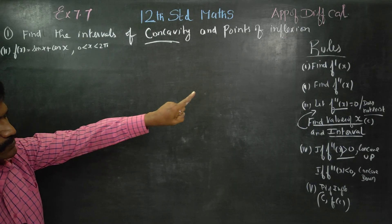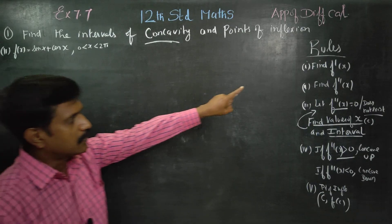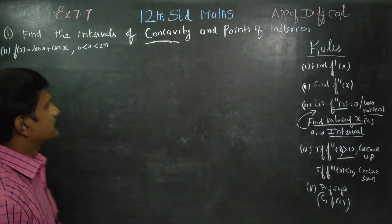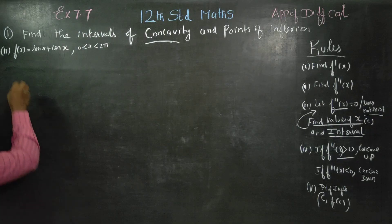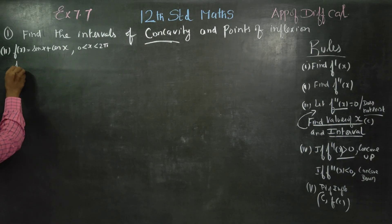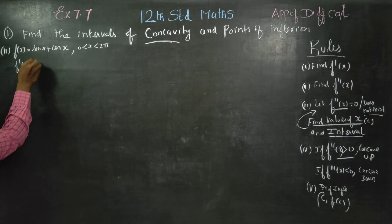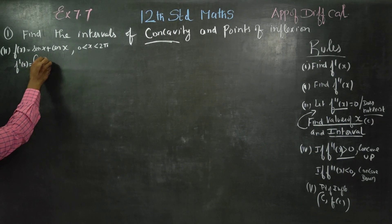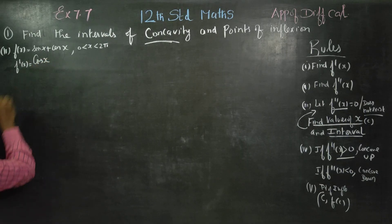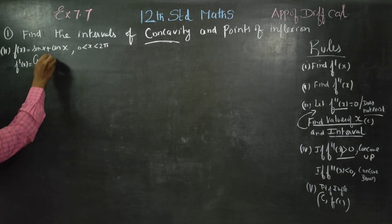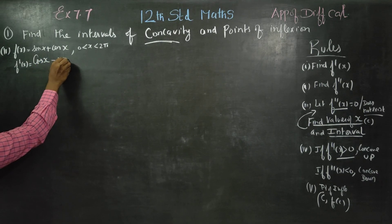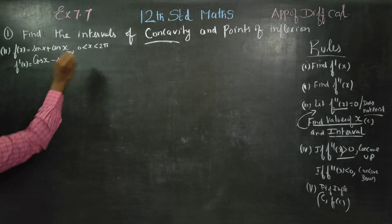First rule, you have to find f dash x — the first differentiation. f dash x: sine differentiated gives you cos x, and cos x differentiated gives minus sin x.